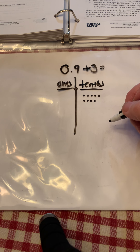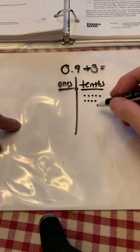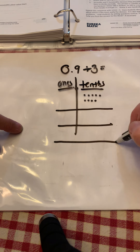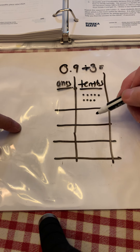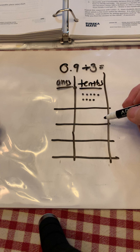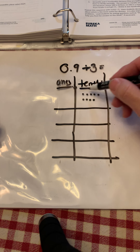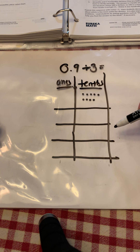Now, we're going to divide the 9 tenths into 3 equal groups. To do this, we're going to need 1, 2, 3 equal groups in our tenths place. And we're going to take those 9 and we're going to divide those into 3 equal groups. So think, if there are 9 tenths altogether, and I want to divide them into 3 groups, how would I divide them up?